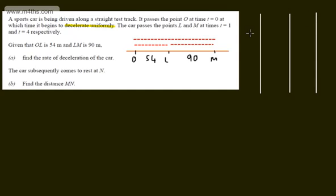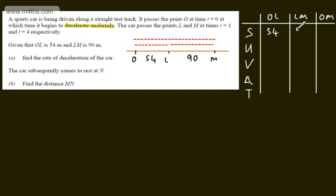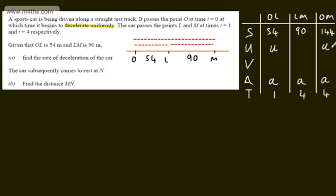We'll have three columns. On the left hand side we've got S which is displacement, U which is initial velocity, V which is final velocity, A which is acceleration, and T which is time. The three rows are OL, LM, and OM. So S values are 54, 90 and therefore 144. This has uniform deceleration so A remains the same throughout. T values are 1, and 4 — and for OL and OM we're starting at O so the initial velocity U is equal in both columns.